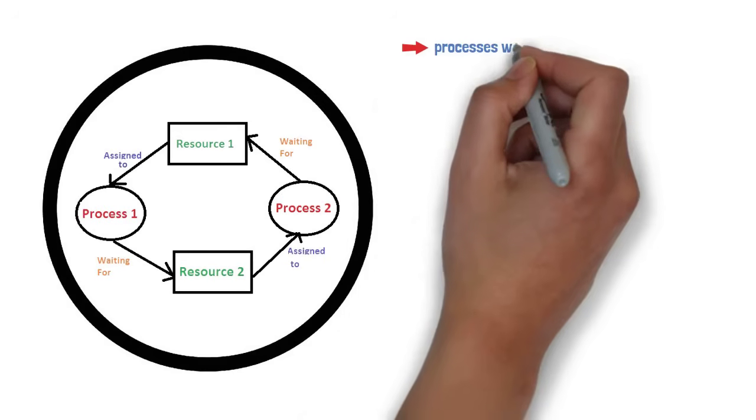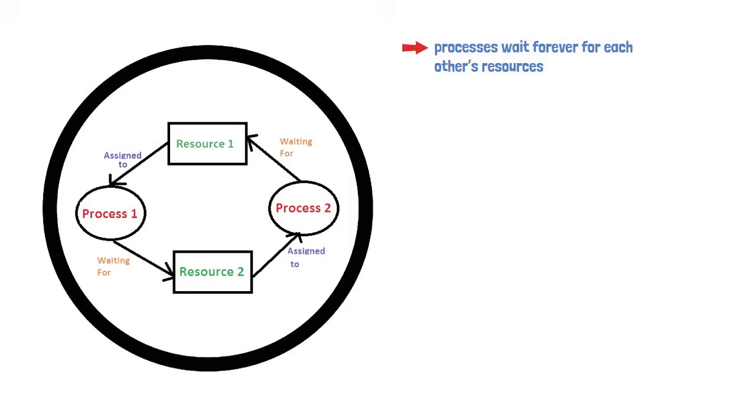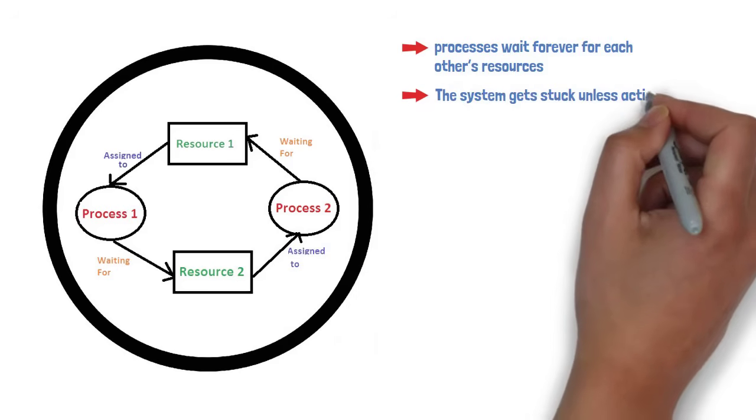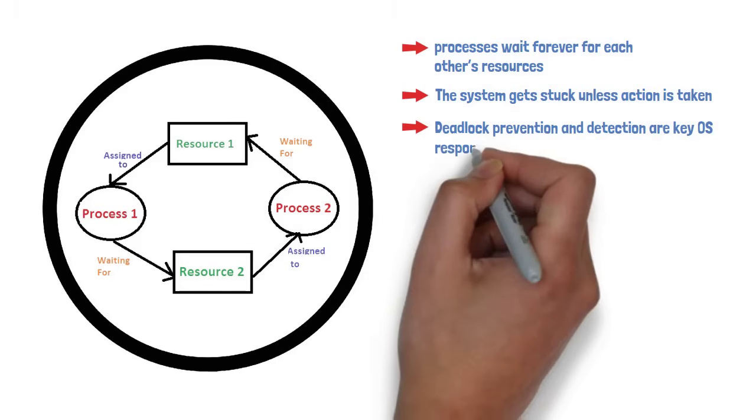Deadlock is when processes wait forever for each other's resources. The system gets stuck unless action is taken. Deadlock prevention and detection are key OS responsibilities.